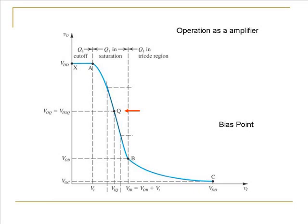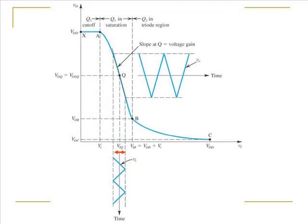So we choose a bias point, let's say Q as shown in this figure. Now around this bias point we give a time varying signal. This small signal around the bias point is amplified by the amplifier and the output is shown as in the graph.